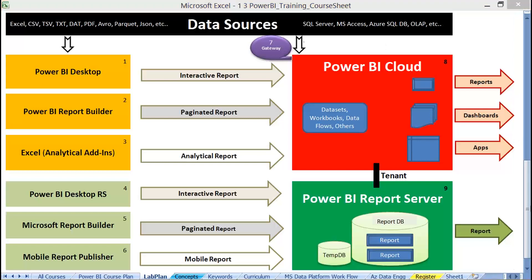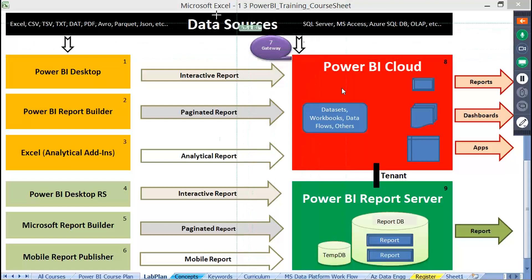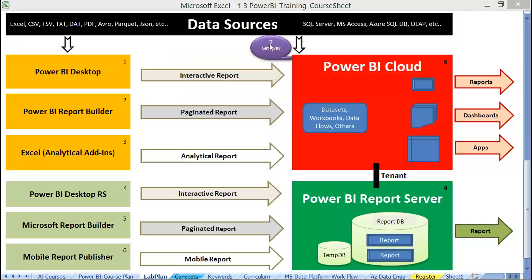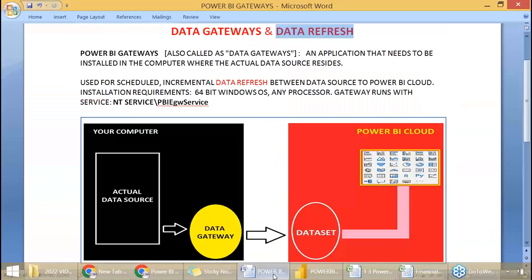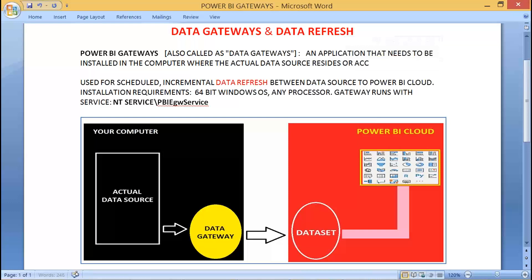Let's understand how to perform this activity. Our agenda: data refresh — from the local data source (black box) to Power BI cloud (red box) using the in-between gateway (the purple box). Power BI gateways, also called data gateways, are an application that needs to be installed in the computer where the actual data source resides or is accessible.